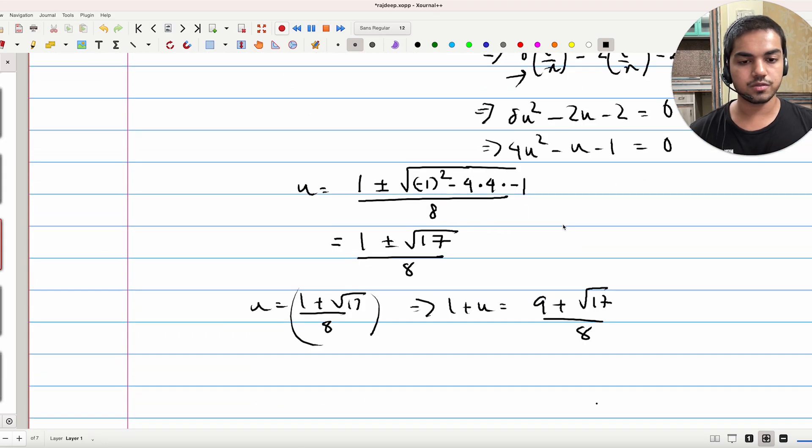If we go back to our form for 1 plus U, which is AC by AB, which is exactly what we want. 9, 17, and 8 are all coprime and 17 is a prime. So our answer is 9 plus 17 plus 8, which is 34. And that's the answer.